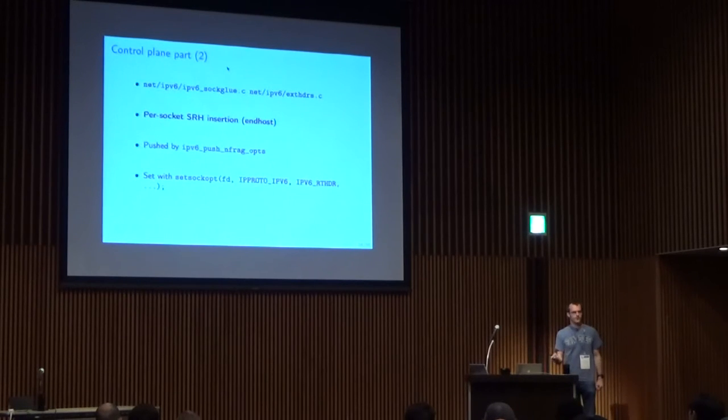In order for an application to impose an SLRH into outgoing packets, we support the setsockopt system call which already existed to impose RH0 stuff, but we extended it to support a segment routing header. When the kernel will construct the headers before sending the packets, just before pushing the IPv6 header, it will push the segment routing header into the packet.